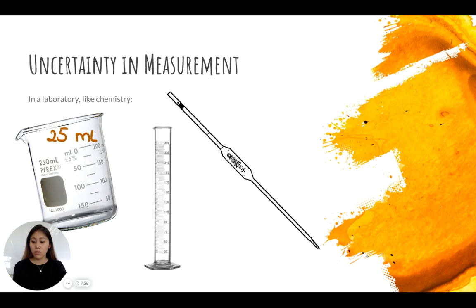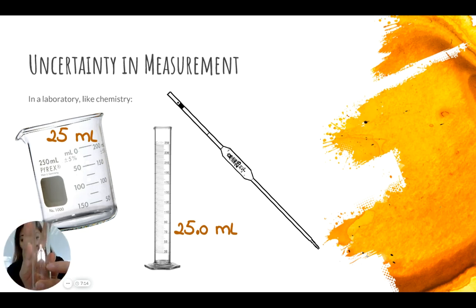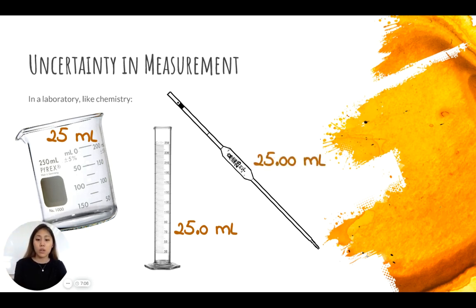You could have 25 milliliters for our beaker, which in this case we would write 25 as this. For graduated cylinder, it's almost as if it's a little bit more accurate. If you take a look, there are a lot more indices. So it makes this piece of glassware more accurate when you measure it. And this one could be even more accurate because this glassware is specifically made to only measure 25 milliliters, nothing more, nothing less.